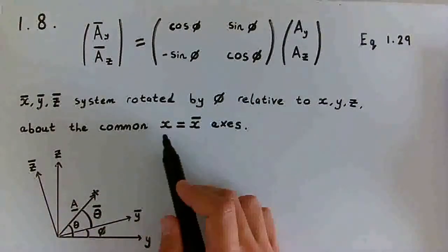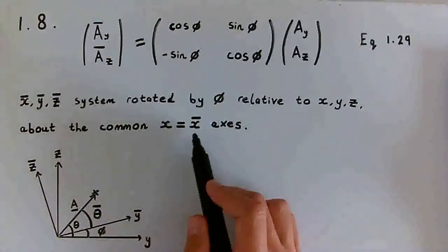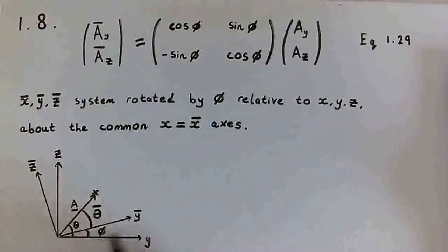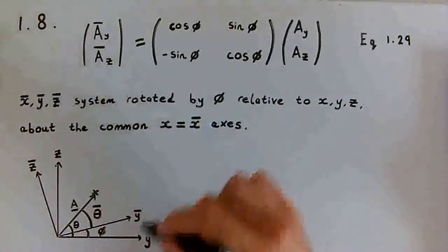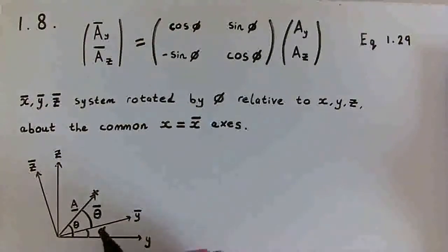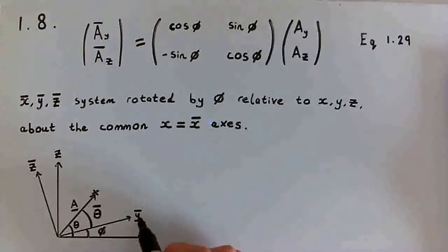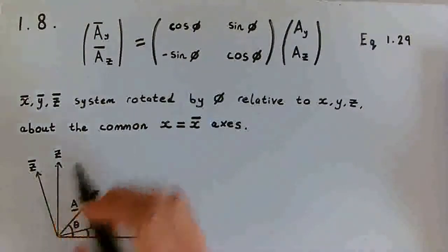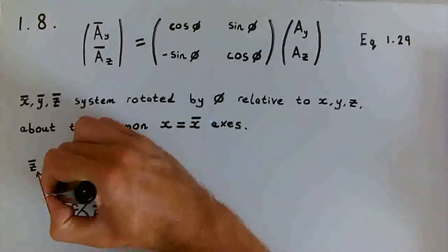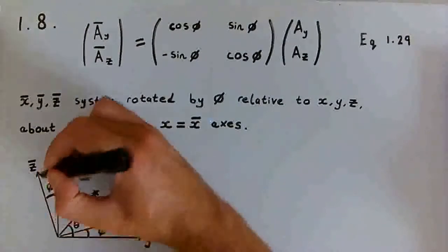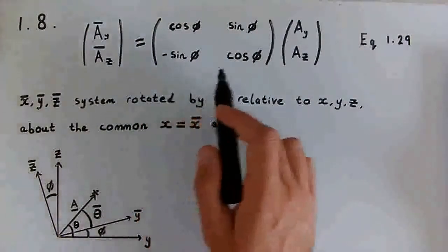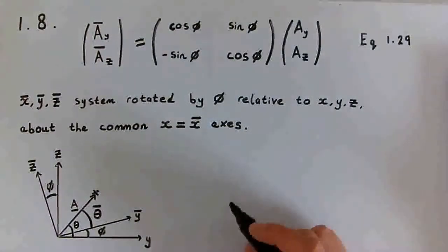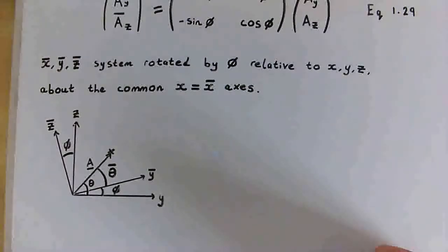The rotation is about a common axis where x equals x-bar, which can be shown in this figure. You've got the z and y-axis orthogonal, and the z-bar and y-bar axes also orthogonal, but there's an angle phi between the y and y-bar axes and also between the z and z-bar axes. I'll label this phi as well. It's important to show where this matrix comes from.